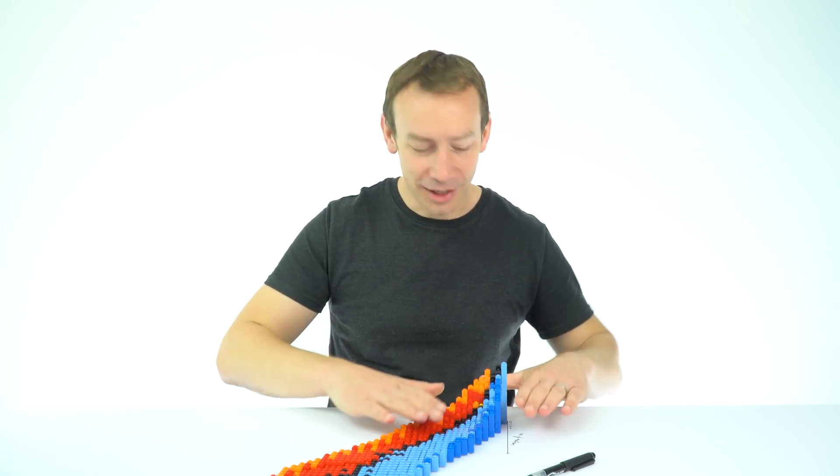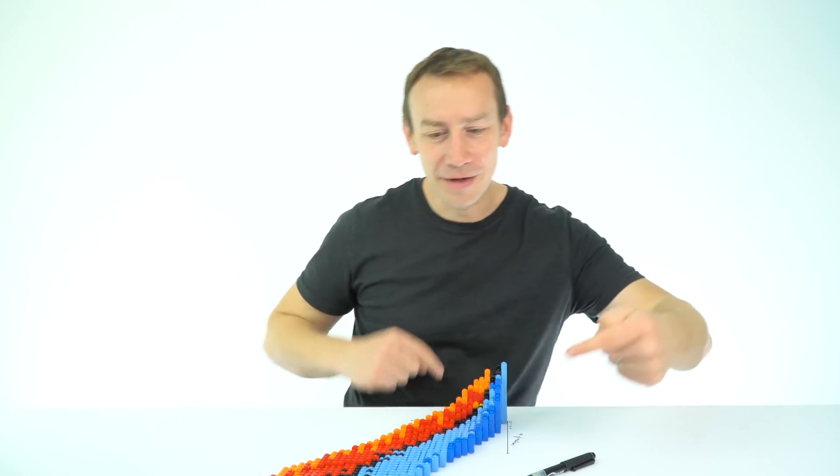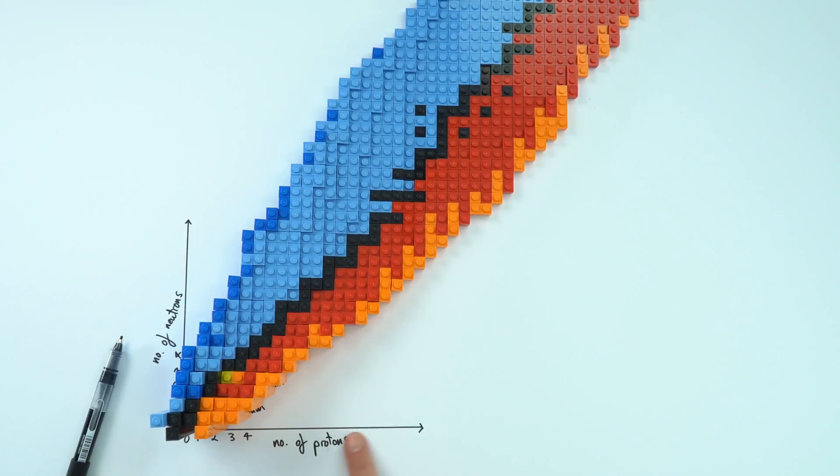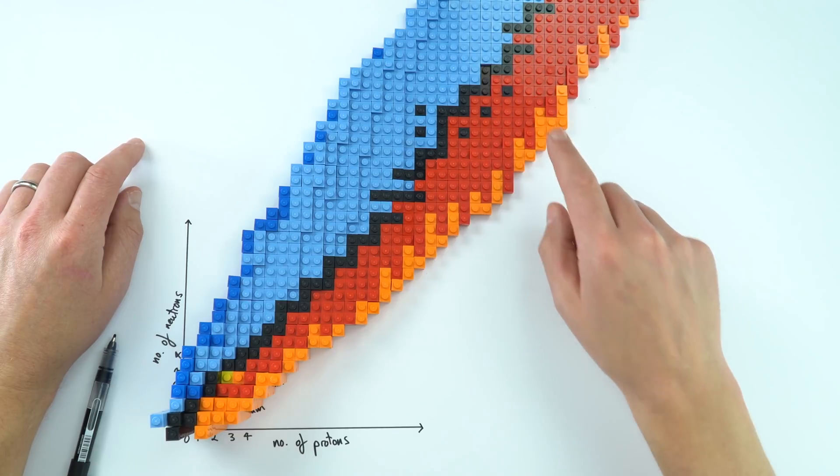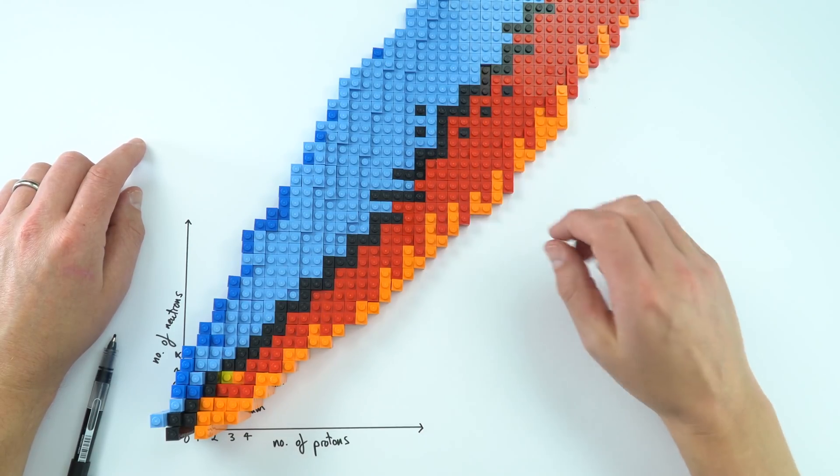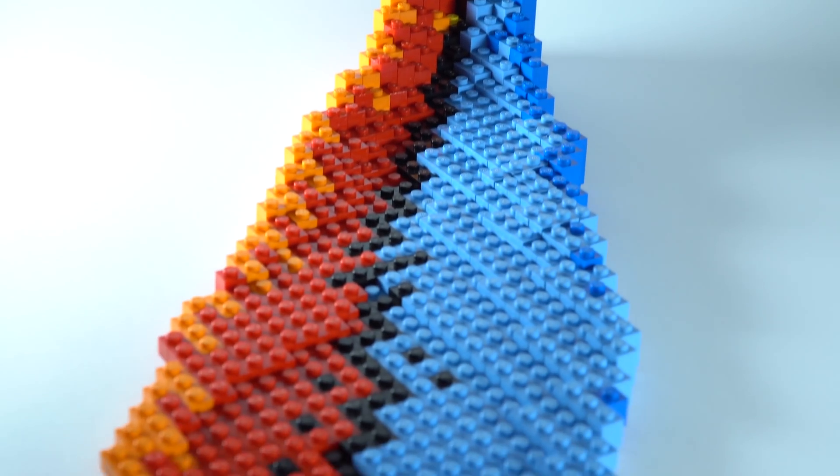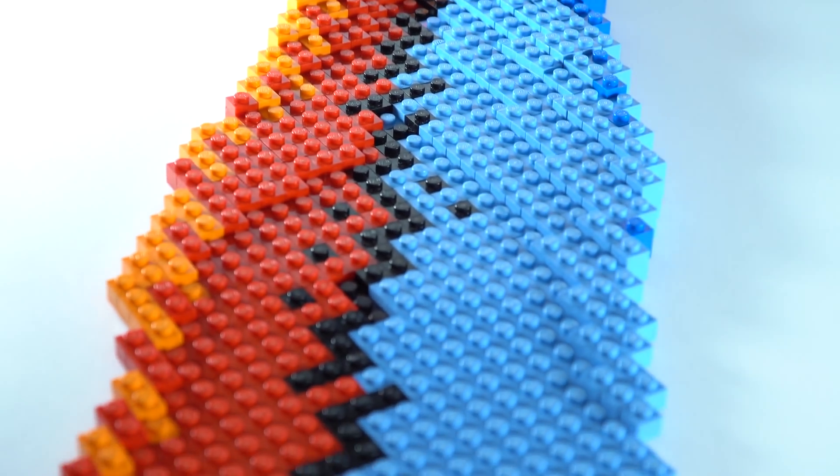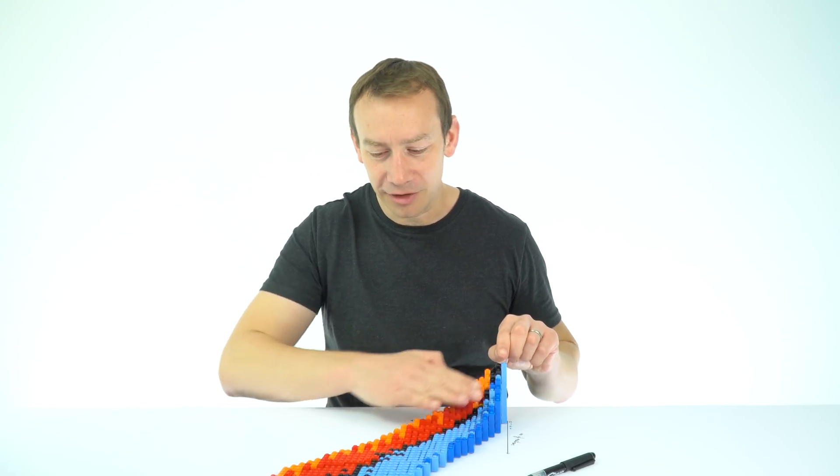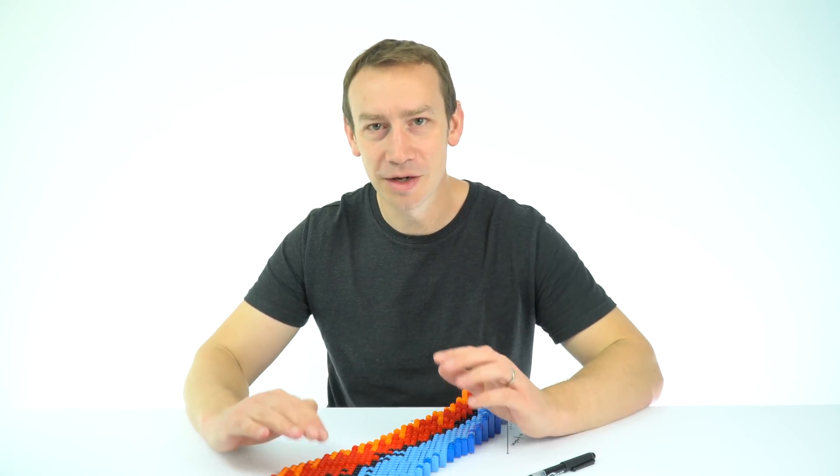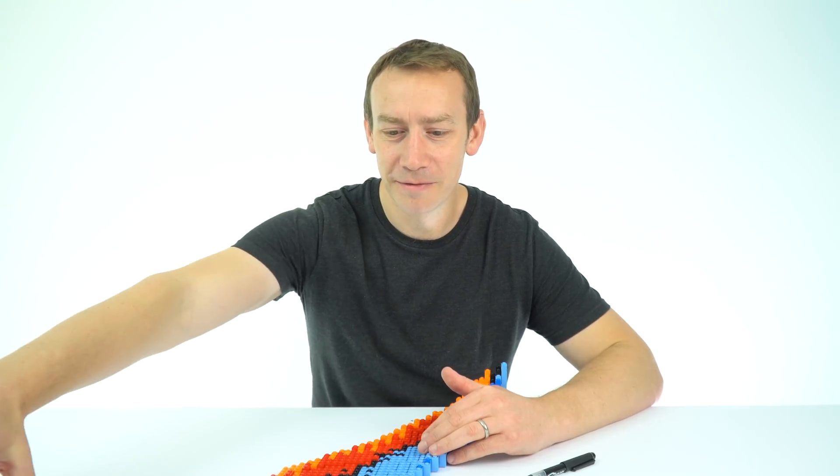Now basically what we have is the height of the lego tells us about the stability of that element and what we have are the different elements going this way across the chart and the number of neutrons going up this way and this shows all the different possible isotopes that could exist. Effectively the lower the height of the lego the more stable it is. So this actually represents the mass excess energy per kilogram and it's really high when we have things like hydrogen it gets lower down to the lowest point around iron and then it gets higher again as we go up to things like uranium at the far end of the chart.